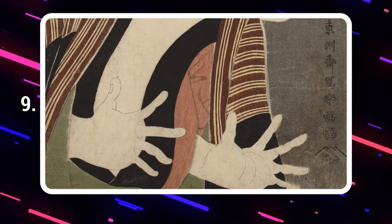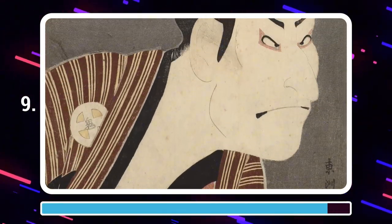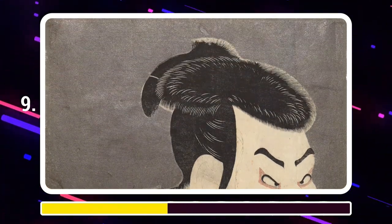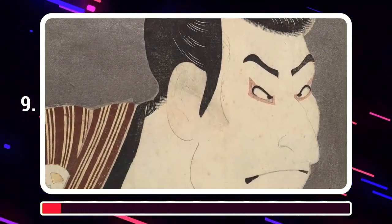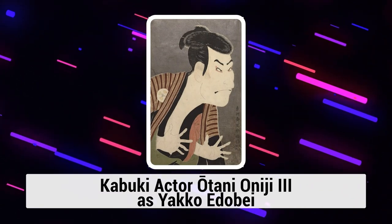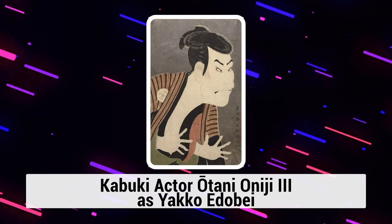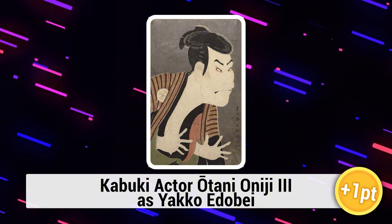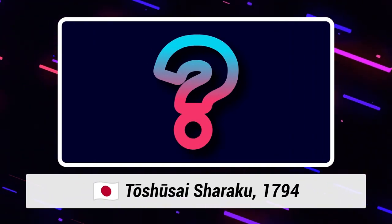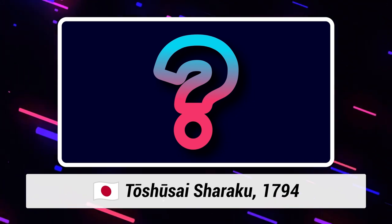Guess the title. Kabuki actor Otani Oniji III as Yakko Edobei, by Tōshūsai Sharaku — whose true identity remains a mystery to this day.